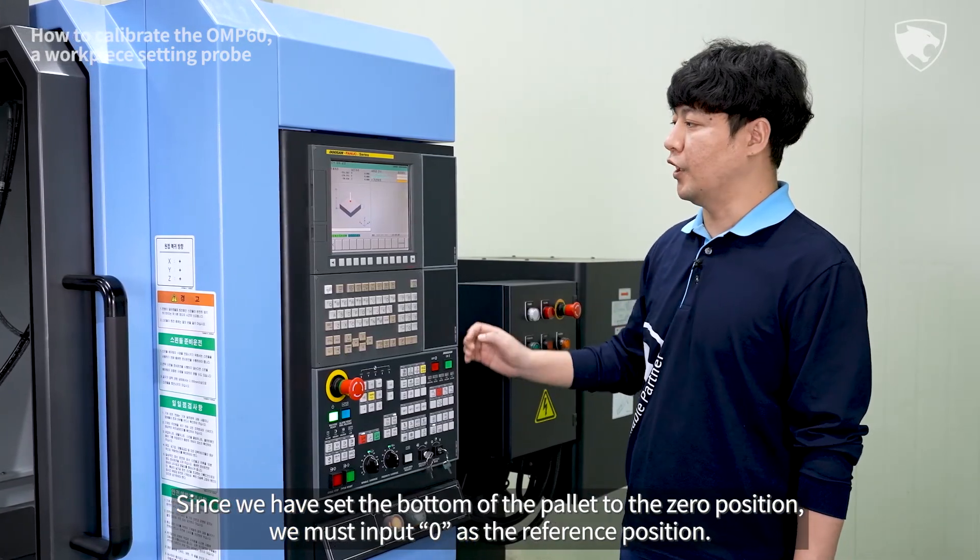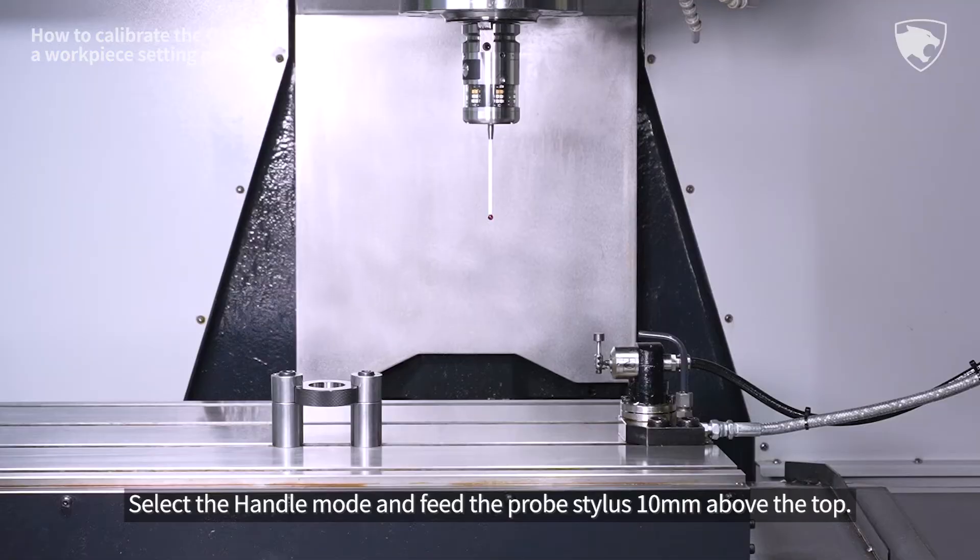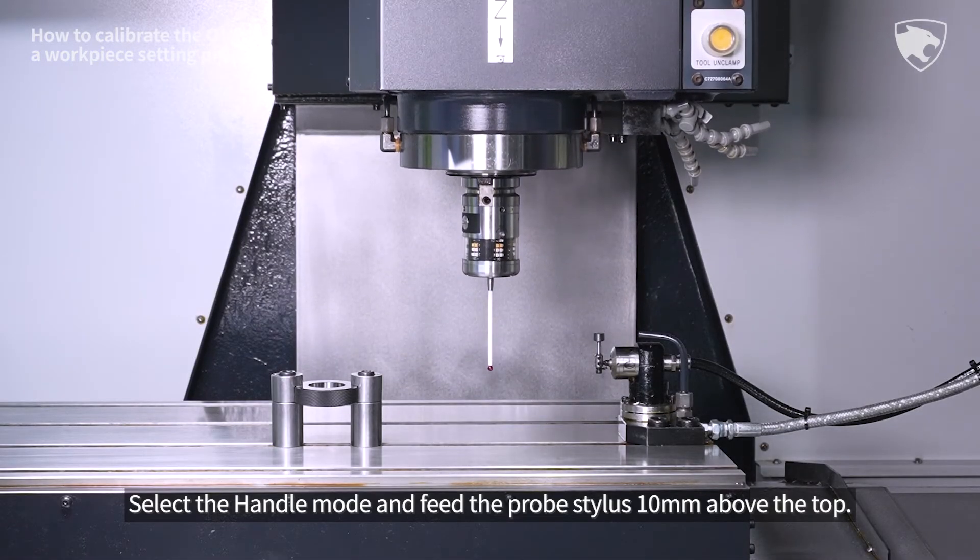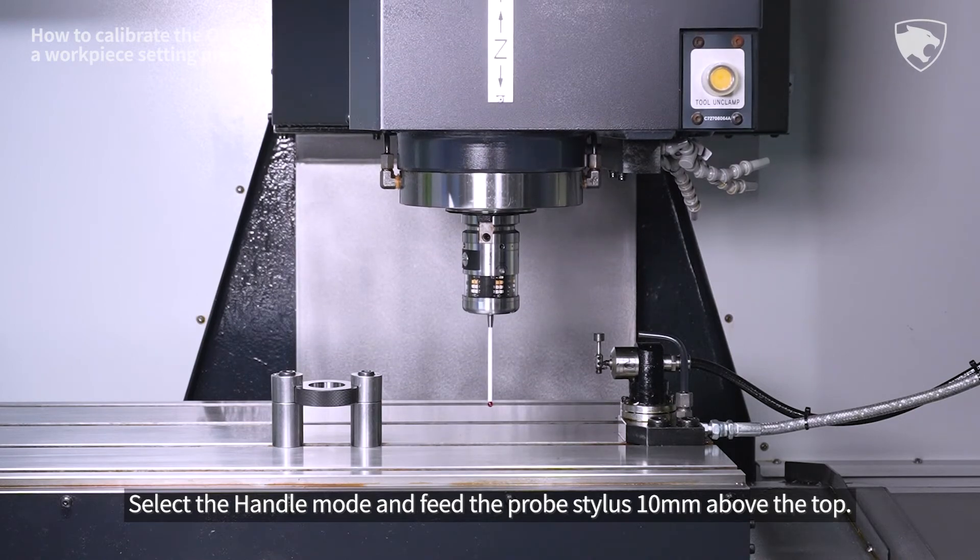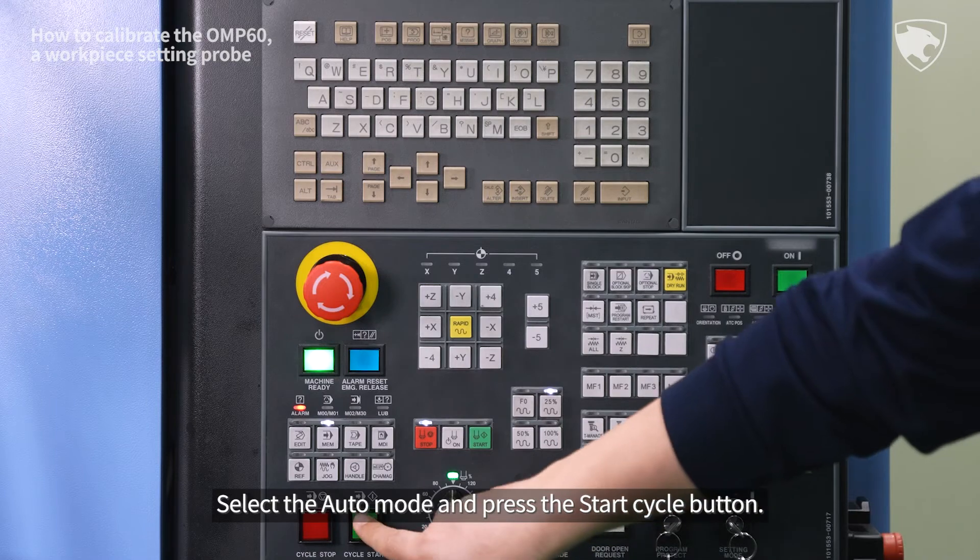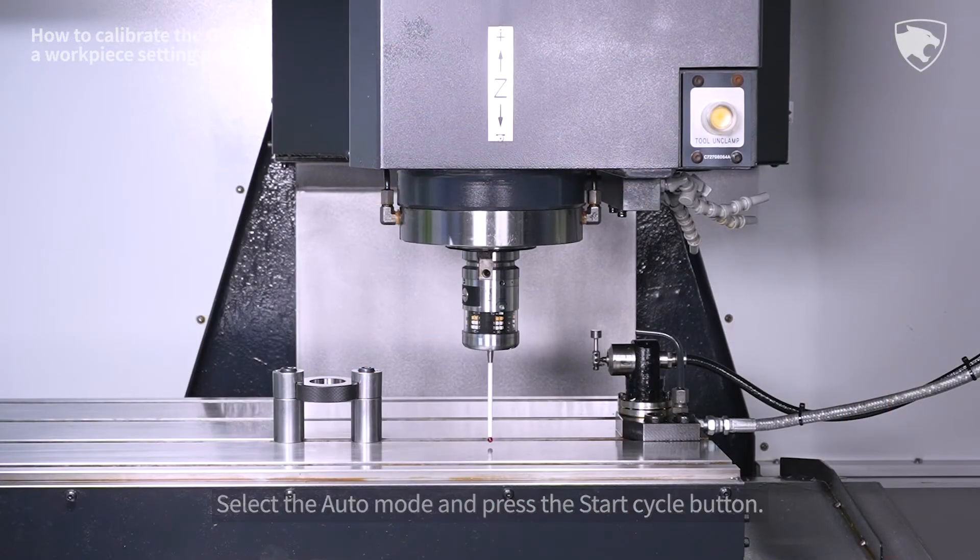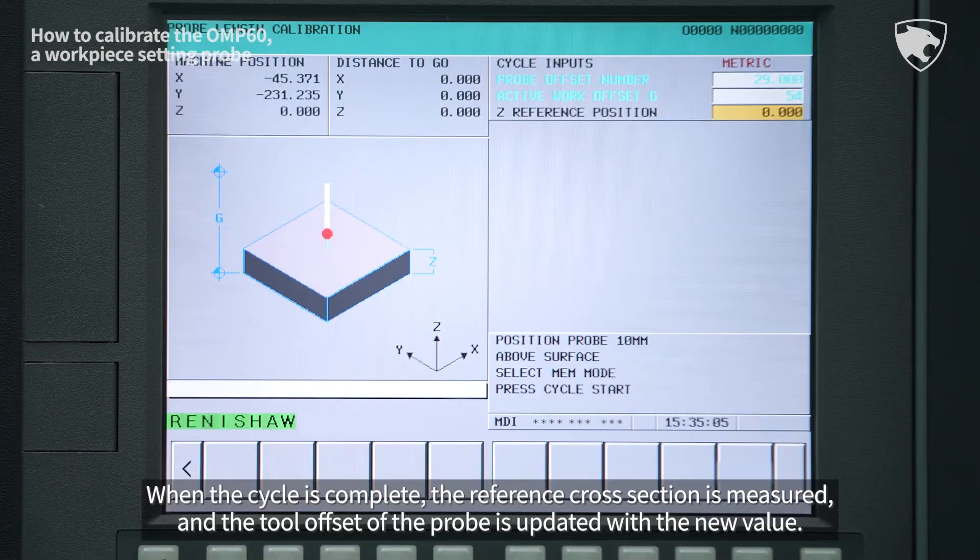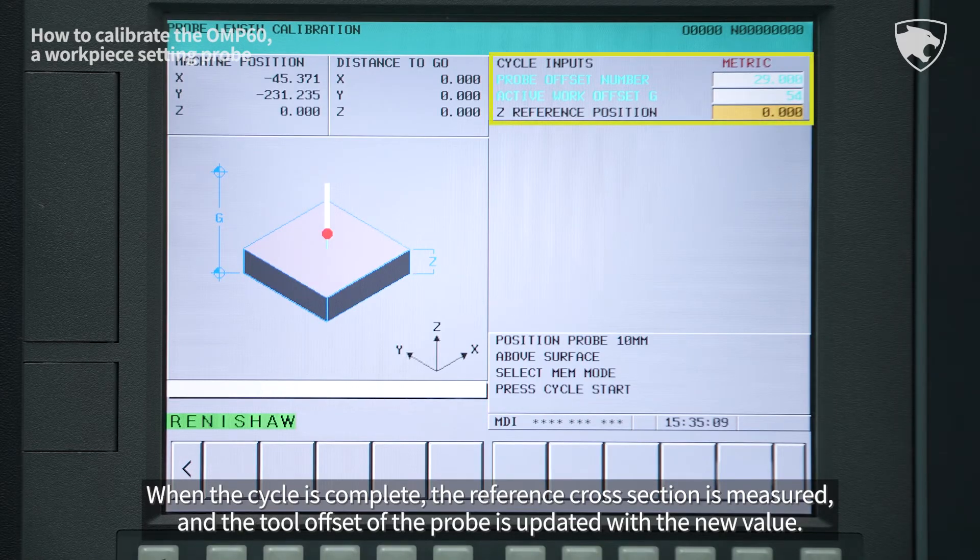Select the handle mode and feed the probe stylus 10 mm above the top. Select the auto mode and press the start cycle button. When the cycle is complete, the reference cross section is measured and the tool offset of the probe is updated with the new value.